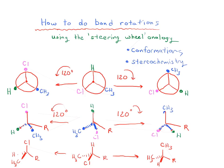The steering wheel analogy is a helpful way of thinking about how to rotate molecules when you're given a molecule drawn with a flat line, a dash, and a wedge — how to rotate each of those groups, thinking of them as three components of a steering wheel. In the next couple of videos, I'll invite you to try using this technique and apply it to a variety of different bond rotations. Thank you.